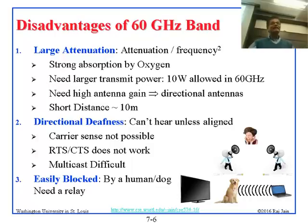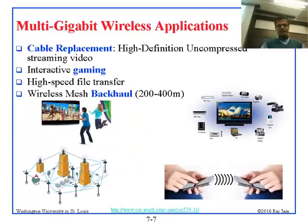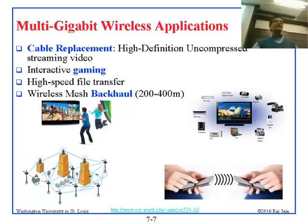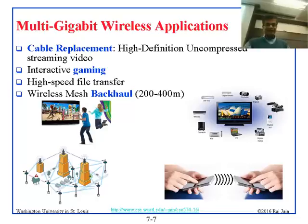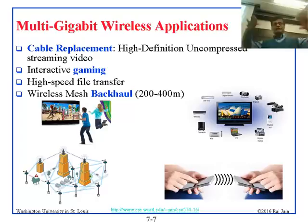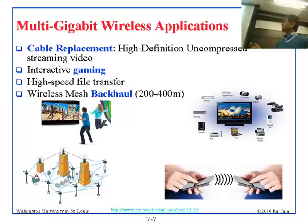These are all the problems, but in spite of that it is succeeding and there are applications for it. Cable replacement is a key use — replacing the cables in the back of a TV with high-speed wireless connections. It's also good for interactive gaming, high-speed file transfer, wireless mesh backhaul over longer distances, and high-speed transmission around the TV setup. We'll continue on this next time.